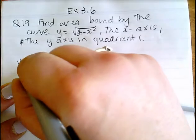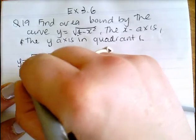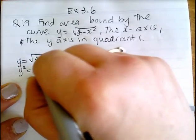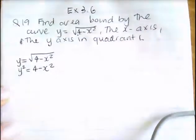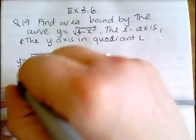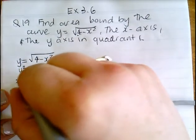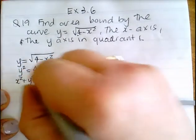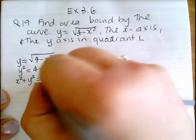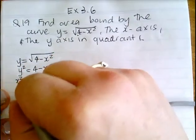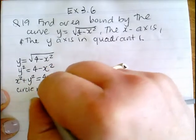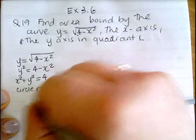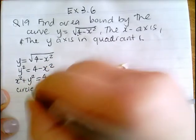If you square both sides, y squared equals 4 minus x squared. Taking the x squared over, you get x squared plus y squared equals 4. This is a circle with radius 2 and center (0, 0).